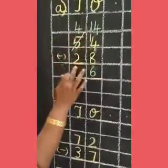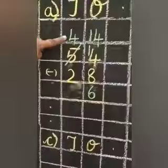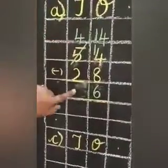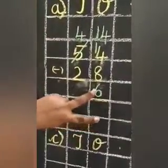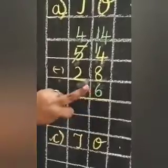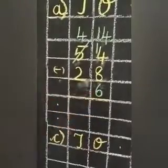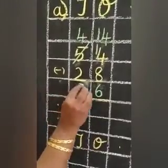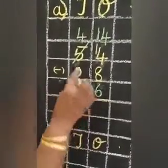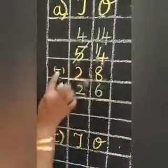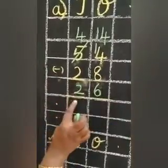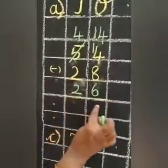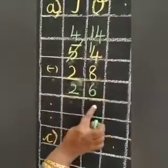4 minus 2. 4 in the mind, 2 in the finger. Before 4: 3, 2. So 54 minus 28 is equal to 26.